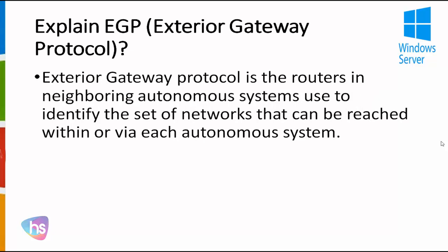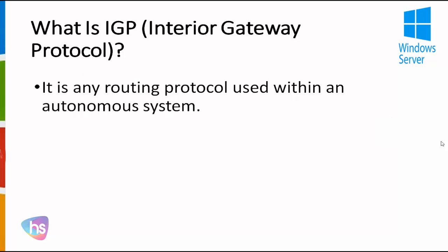Explain EGP — Exterior Gateway Protocol. The Exterior Gateway Protocol is used by routers in neighboring autonomous systems to identify the set of networks that can be reached within each autonomous system. Next, what is IGP — Interior Gateway Protocol? It is any routing protocol used within an autonomous system, which is why we call it the Interior Gateway Protocol.